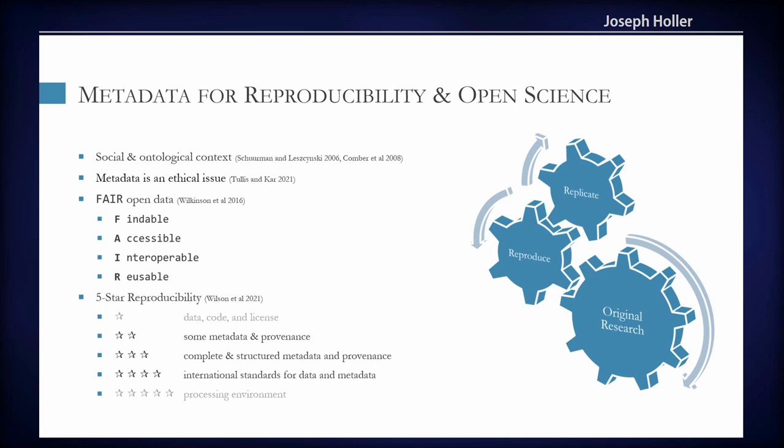In a recent publication, Wilson et al. wrote about a five-star guide to reproducible research, distinguishing three of the five stars with metadata. So just providing the data and code with a study gets you one star in their method. Two stars is achieved with a little bit of metadata documentation. Three stars is with complete metadata documentation. And four is if you follow the international standards when you specify that metadata.